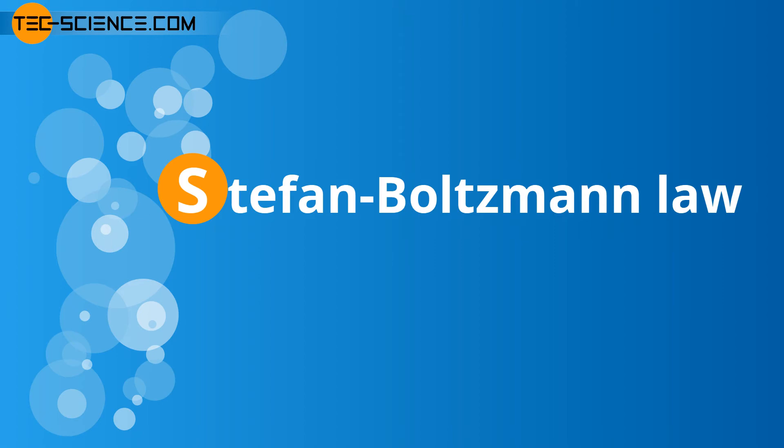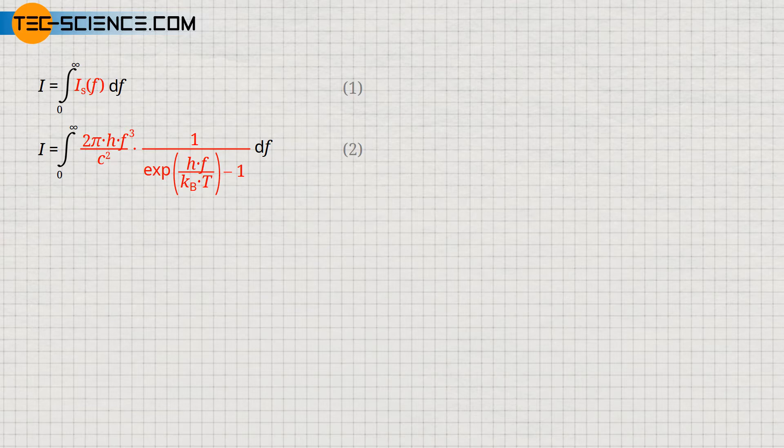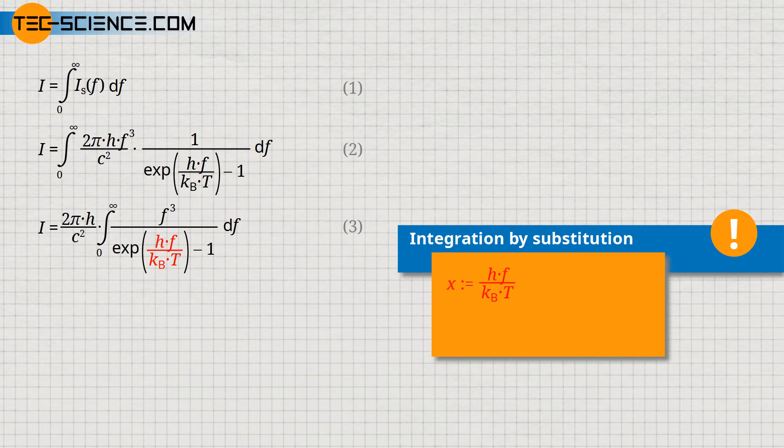Derivation of the Stefan-Boltzmann law: we integrate Planck's law using the frequency form. In principle, one could also integrate the wavelength form of Planck's law over all wavelengths, but this would ultimately lead to the same result. The red-marked term in equation 2 contains only constants and can therefore be written before the integral. The integral itself can be solved by replacing the red-marked argument of the exponential function by a new variable x — a procedure called integration by substitution.